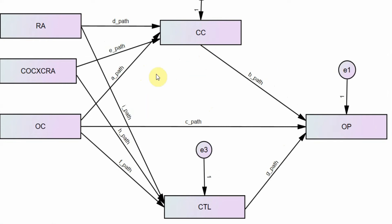We need to create certain formulas that can help us calculate the estimates — whether or not there is an indirect effect or whether or not the indirect effect is being moderated. We calculate the indirect effect through multiplication of these paths: from OC to CC, that is A path multiplied by B path. Similarly, the indirect effect from OC to CTL to OP is calculated by multiplication of F path into G path. The path from the interaction term to the mediator is E path, whereas H path shows the path from the interaction term to the other mediator. To get the index of moderated mediation, you simply multiply E path with B path, and H path with G path.